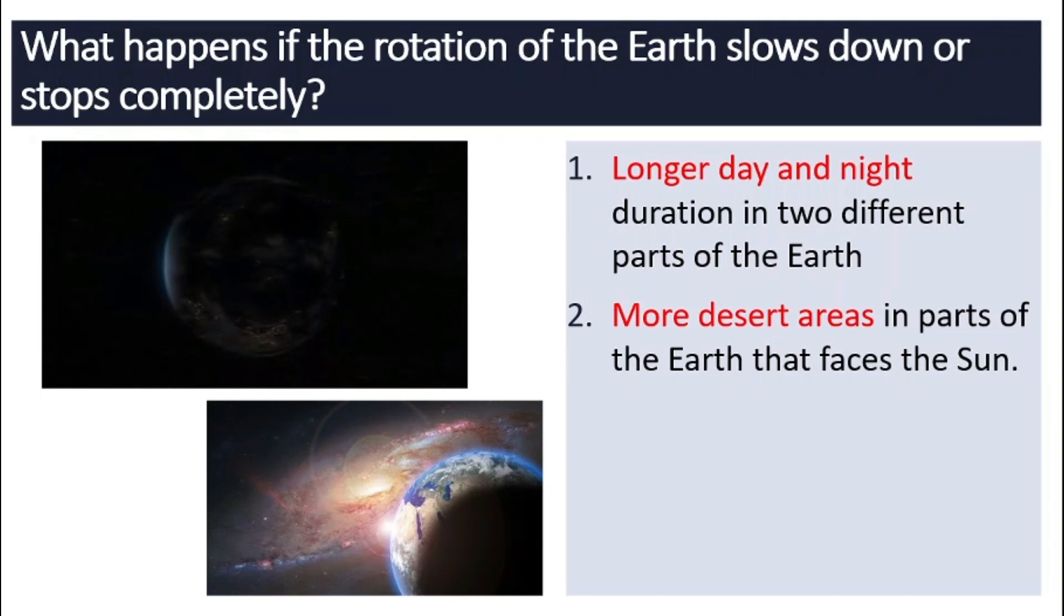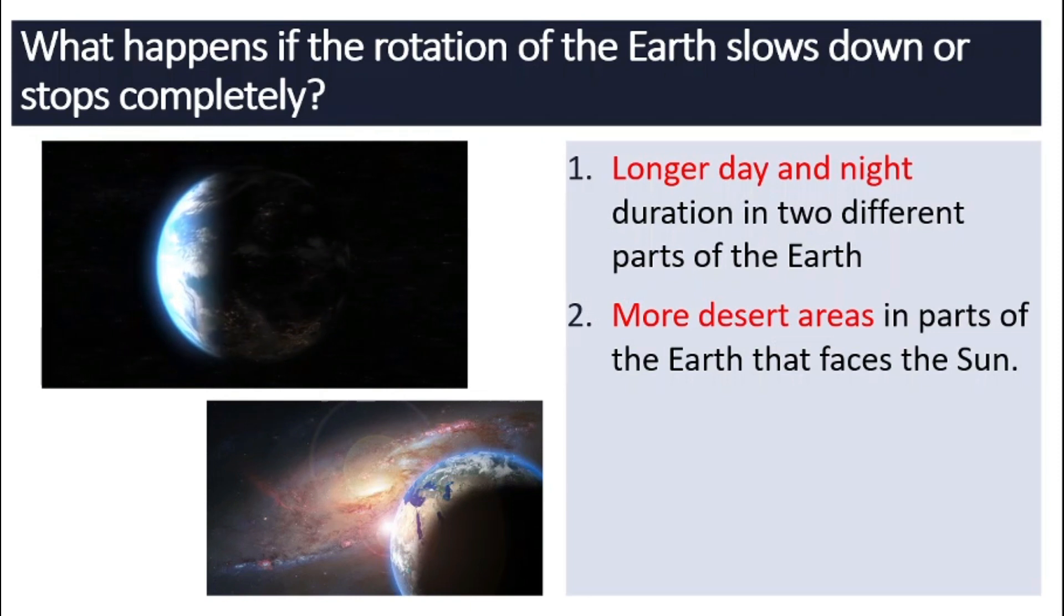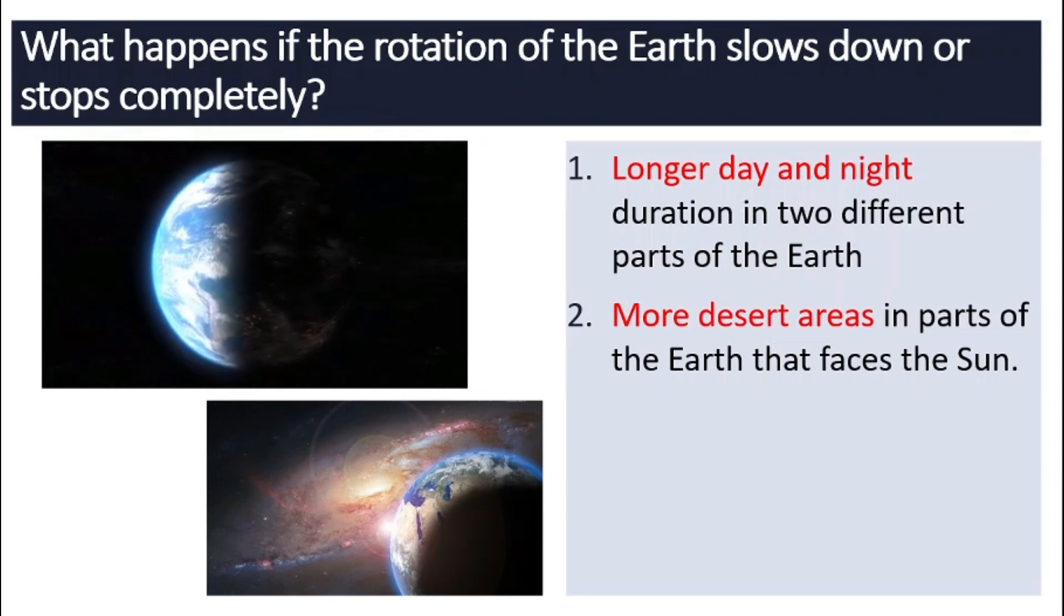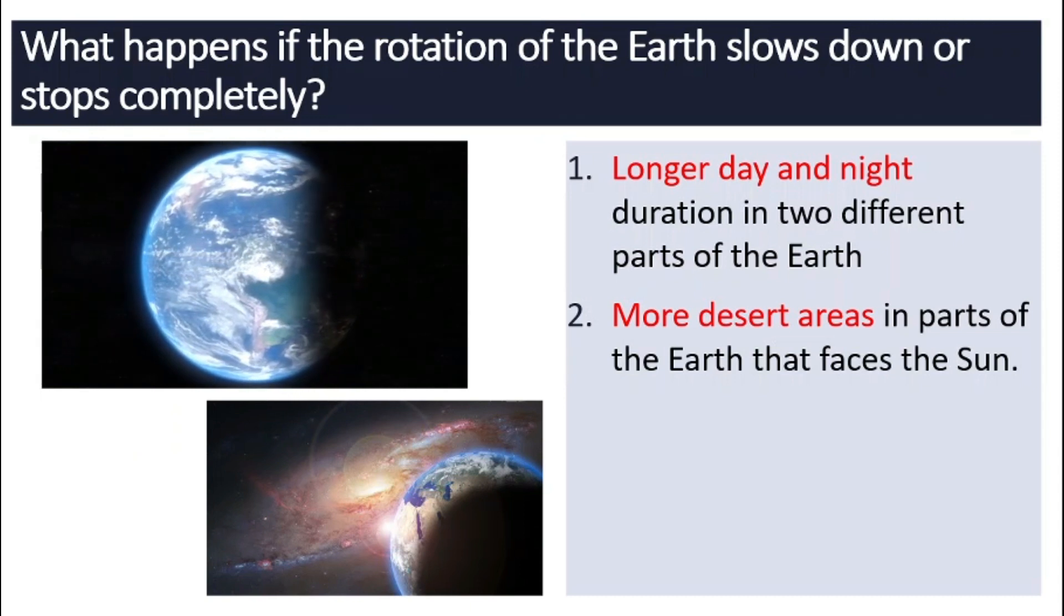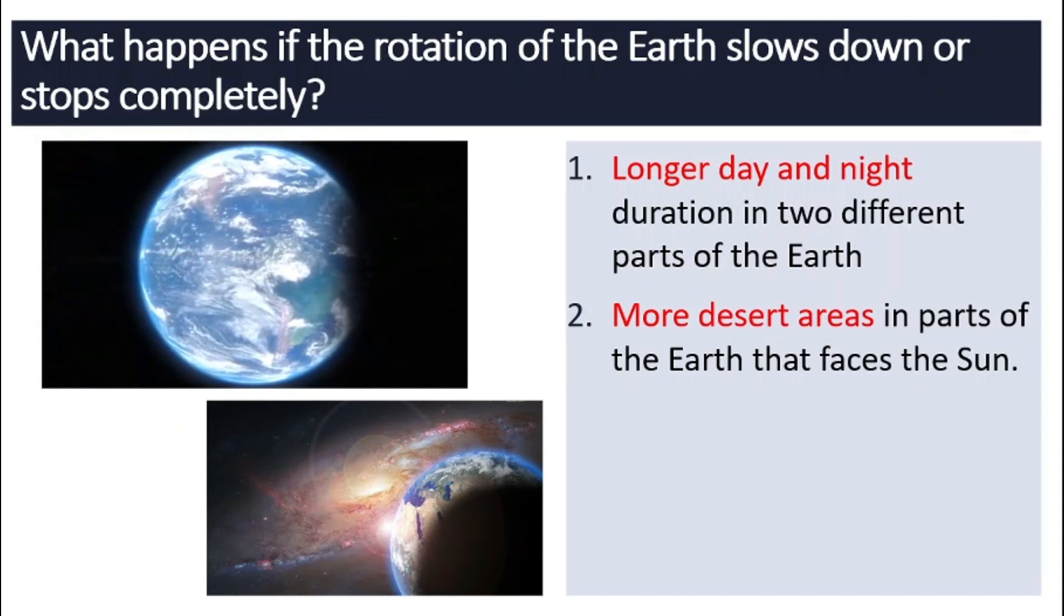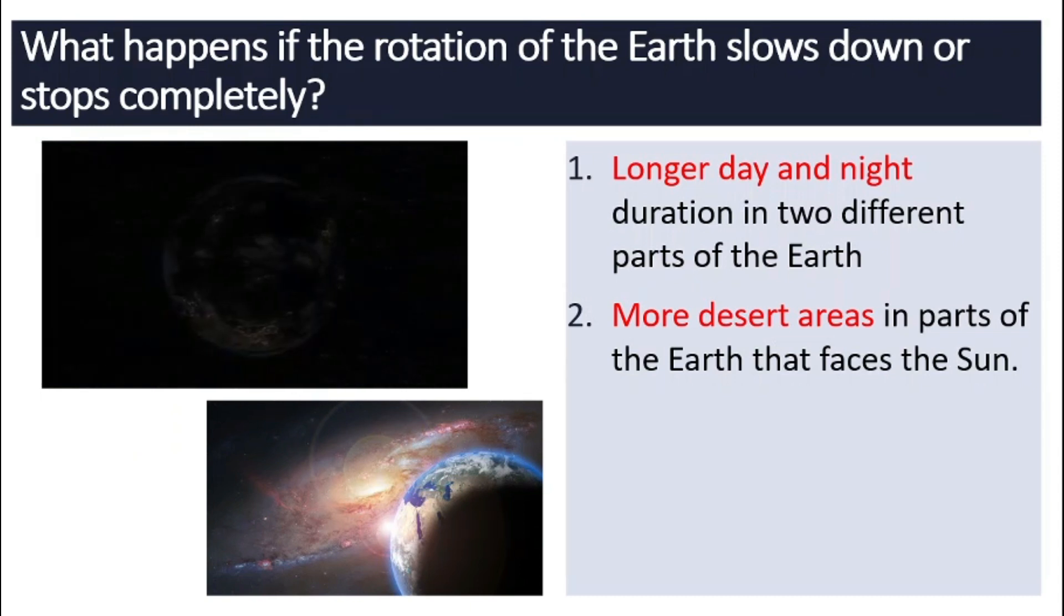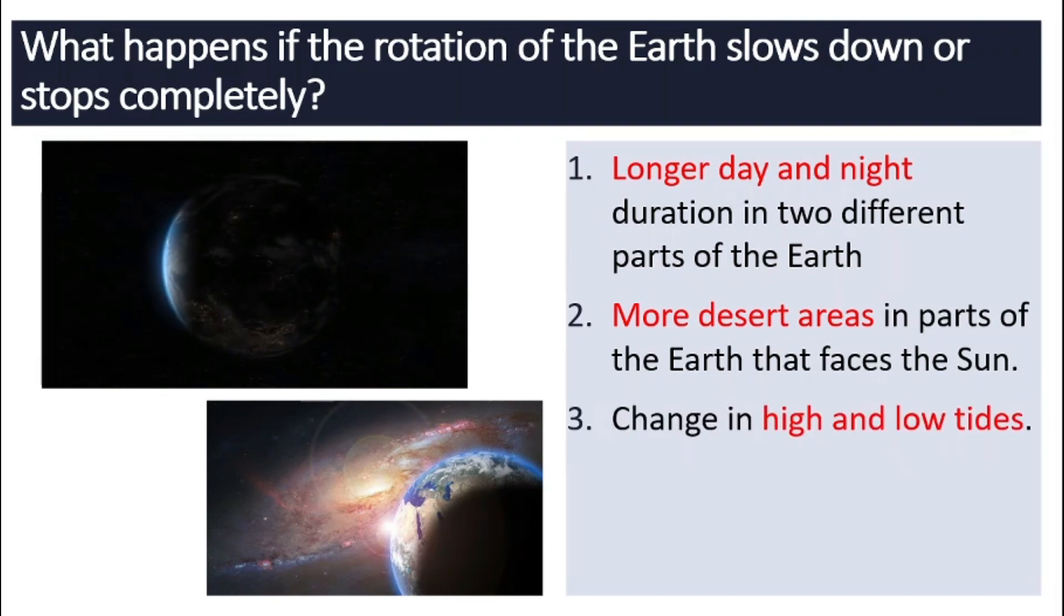The face of the Earth that faced the Sun, the bright side, will have more desert areas because that area will be constantly facing the Sun as the Earth stopped rotating and its temperature is gonna rise.